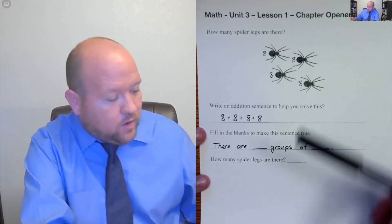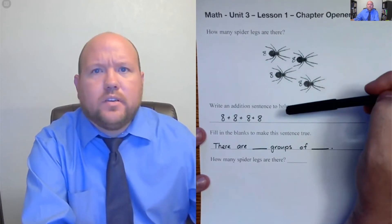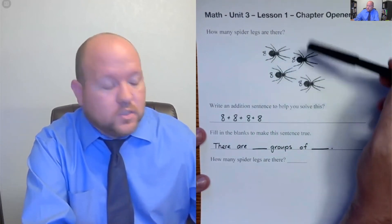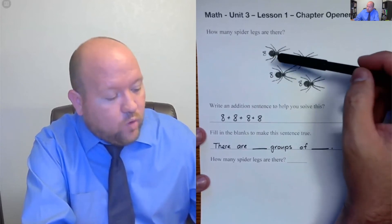When I look up here, are there eight groups or are there four groups? When I look at this, I see that there are four groups.